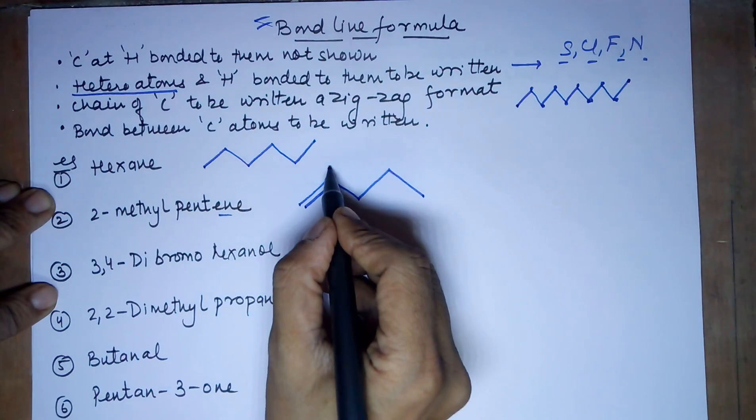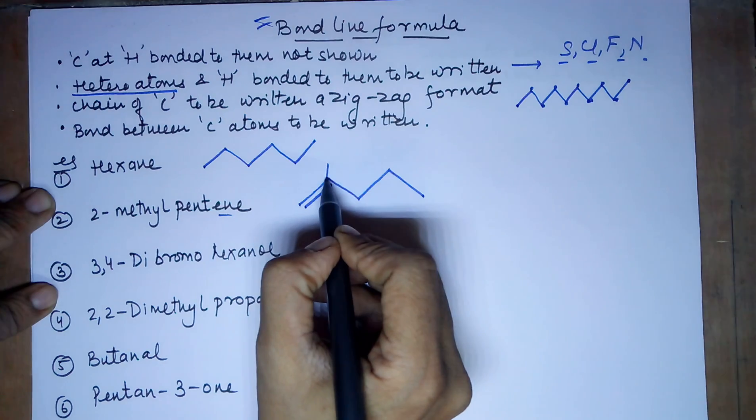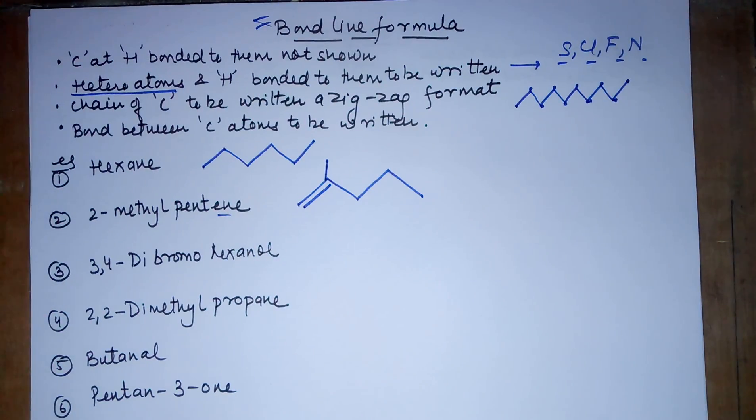The second carbon has a methyl group. This is your second carbon and this becomes a methyl group. This is one carbon attached here showing it's methyl. Hydrogens are not to be shown. Carbons are also not to be shown.